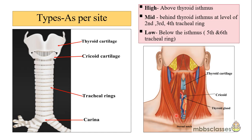Next you encounter the strap muscles — the sternothyroid and sternohyoid muscles — present on both sides of the neck; tracheostomy is done in the midline. Then you encounter the isthmus of the thyroid gland, which normally lies in front of the second, third, and fourth tracheal rings. You may also encounter the inferior thyroid vein, and in children, sometimes the left brachiocephalic vein and the brachiocephalic artery.